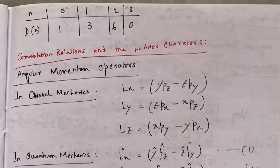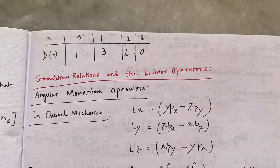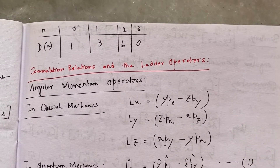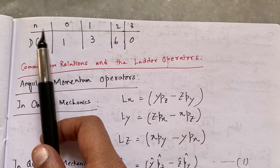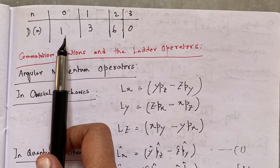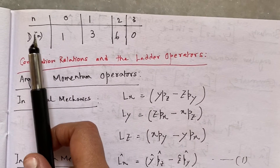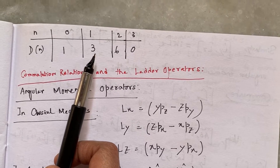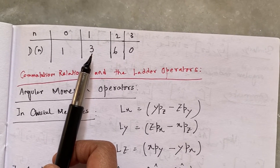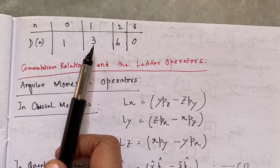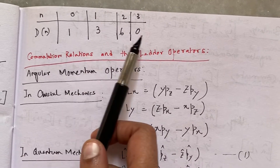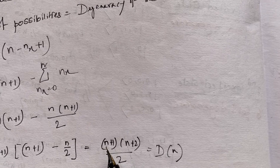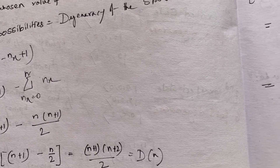We have discussed the degeneracy of the 3D harmonic oscillator in our previous video. We have seen that for the ground state where n equals 0, degeneracy is 1 because the ground state is a single state. For the first excited state when n equals 1, we got 3 states corresponding to the same energy value, which means the degeneracy of that energy level is 3. I have calculated all these values using this formula — just put n equal to 0, 1, 2, or 3 to find out the degeneracy of the 3D harmonic oscillator.